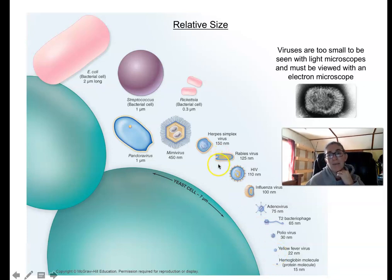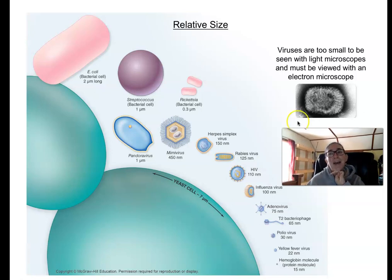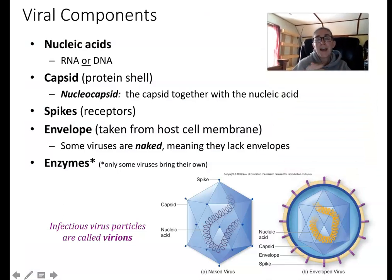We can, however, image viruses with an electron microscope, which has much higher magnification and resolution. We can get images of these viruses — just not in a typical light microscope, but in half-million-dollar, room-size microscopes in research facilities. Viruses are super simple structures, even way simpler than prokaryotic cells, with very few parts.